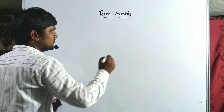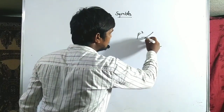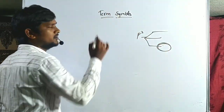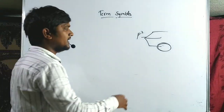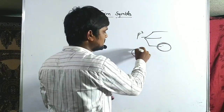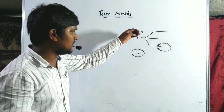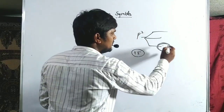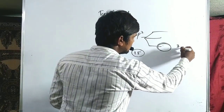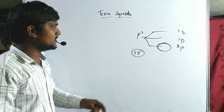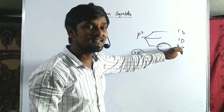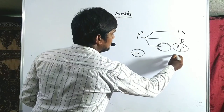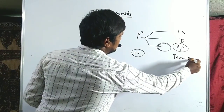Term symbols represent different energy levels of a configuration. For example, a P2 configuration has 15 microstates — energy levels we already calculated in our previous lecture. One of the energy levels is 3P, another is 1D and 1S. These are the possible terms representing certain energy levels, and those are called term symbols.